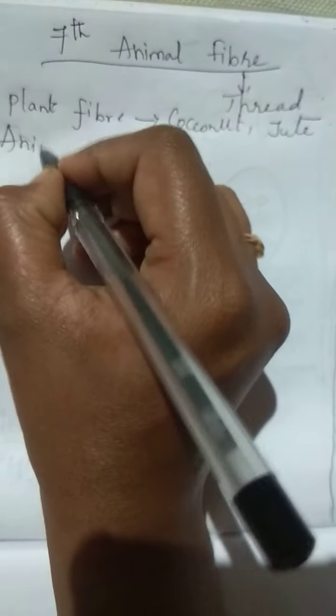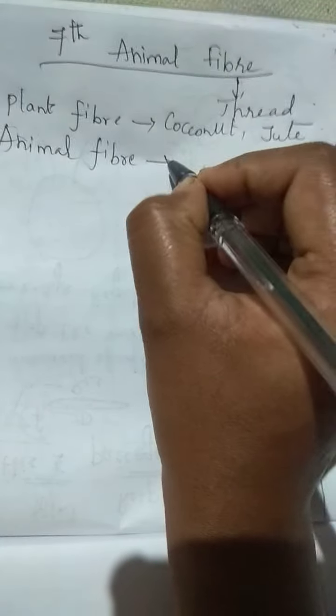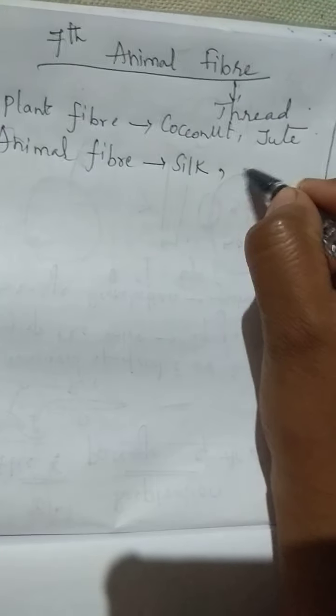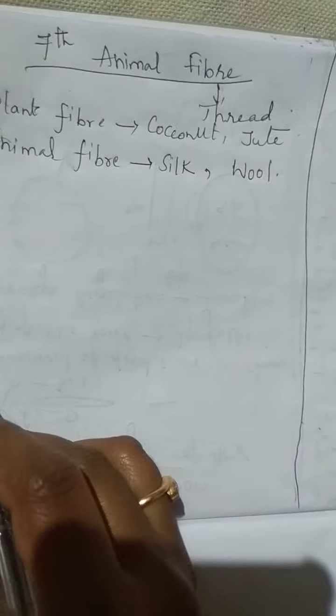Next, animal fiber. Animal fiber examples: silk. Silk we will get from silkworm. And wool. Wool we will get from sheep, goats, etc.